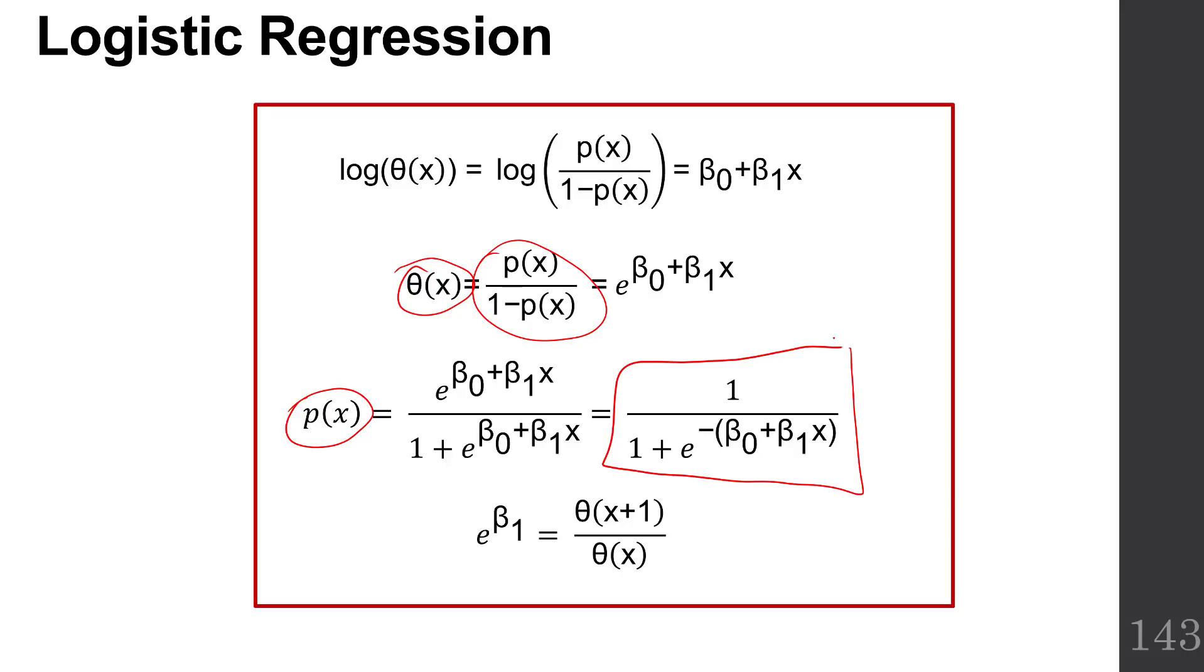But another way that we can write that is 1 over 1 plus e to the negative beta naught plus beta 1x. That's just dividing the top and bottom by e to the beta naught plus beta 1x. It gives you 1 in the numerator, 1 in the denominator here, and then 1 over e to the beta naught plus beta 1x here, which is a negative exponent.